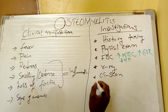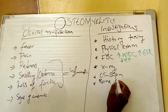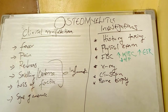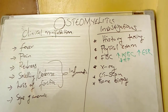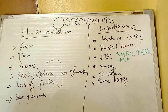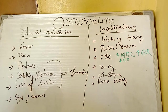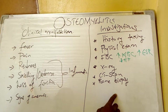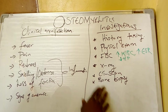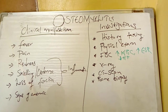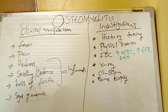You can also do what we call a bone biopsy. You will get a piece of bone for microscopy, culture and sensitivity, so as to isolate the causative organism. When you do a bone biopsy, it is going to show the bacteria that is causing the osteomyelitis, so that you know the type of antibiotic to give to the patient.